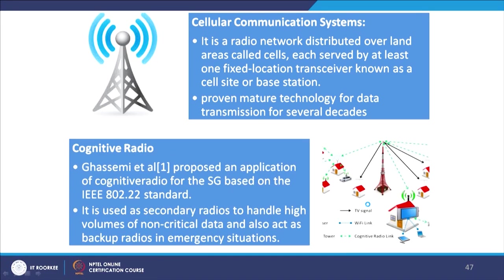Cognitive radio has been proposed for smart grid based on the IEEE 802.22 standard. It is used as a secondary radio to handle high volumes of non-critical data and also acts as a backup radio in emergency situations.